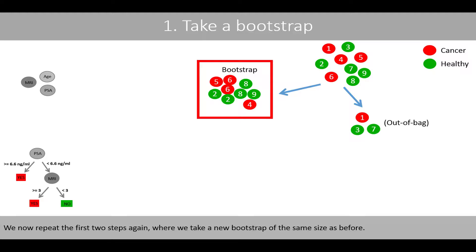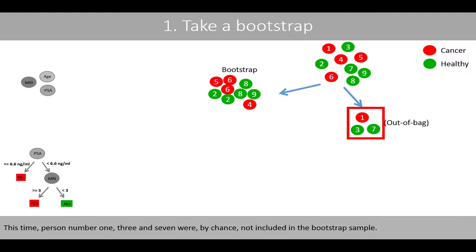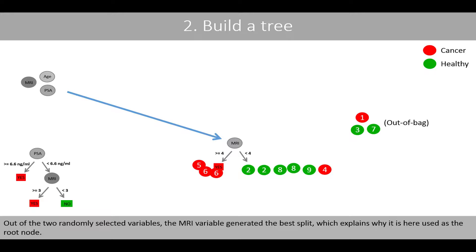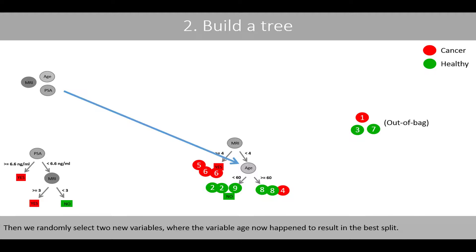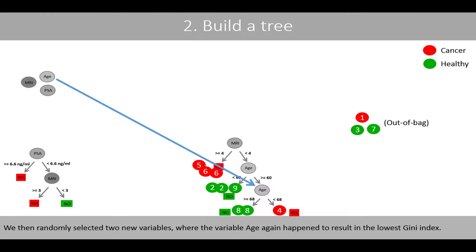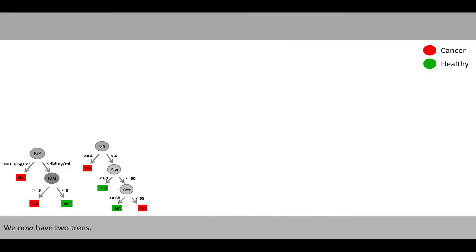We now repeat the first two steps, taking a new bootstrap of the same size. This time, person number 1, 3, and 7 were by chance not included in the bootstrap sample. Out of the two randomly selected variables, the MRI variable generated the best split and is used as the root node. We then randomly select two new variables, where the age variable happened to result in the best split, and again age resulted in the lowest Gini index at the next node. We now have two trees.